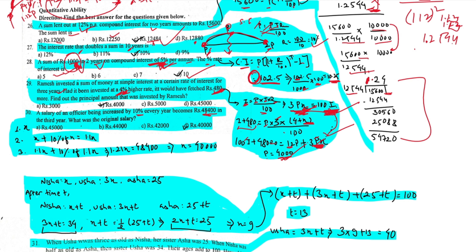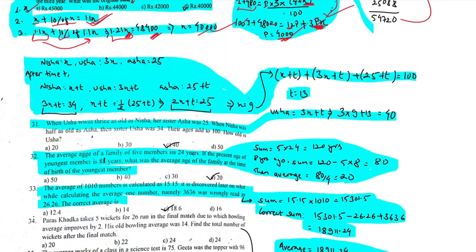48,400 — and the original salary is the initial salary. Next: the first year salary is x plus 10% of x, which is 1.1x. The next year is 1.1x plus 10% of 1.1x, which equals 1.21x. The third year salary gives 40,000 as the initial salary.